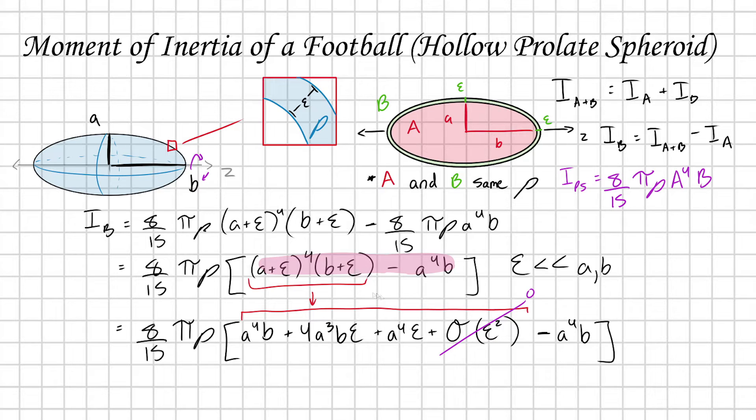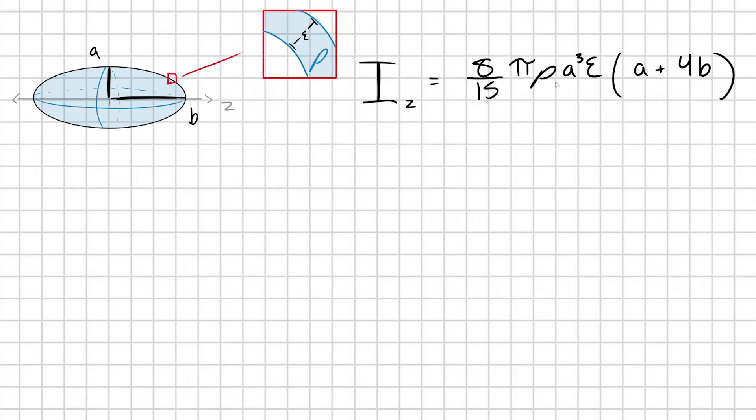If we do that, the A^4 B terms cancel out with each other and we get a really nice expression. I have 8/15 times π times ρ, I can pull out an epsilon and an A^3, and I have times 4B plus A. Let me box this expression up. We have a nice expression for the moment of inertia of a spheroid shell with mass density ρ.